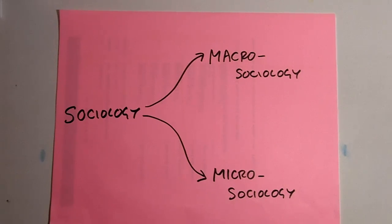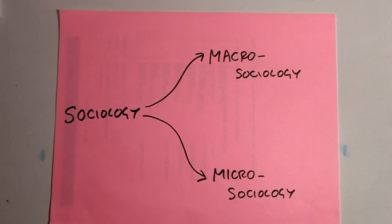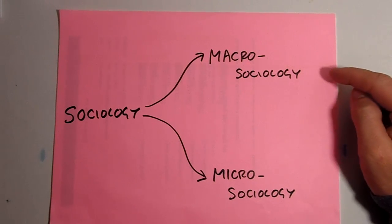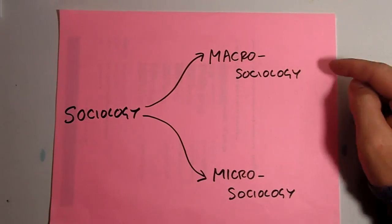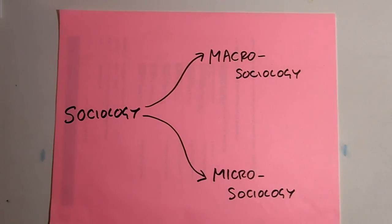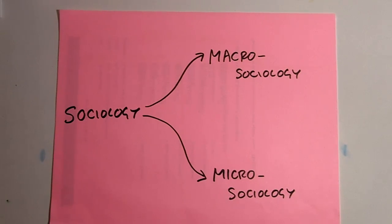One thing that's important to point out is that the line between these two camps is not always clear, and it doesn't really need to be. The primary reason for creating this division within sociology is that it helps us make better decisions about how we go about studying the different things that sociologists are interested in.